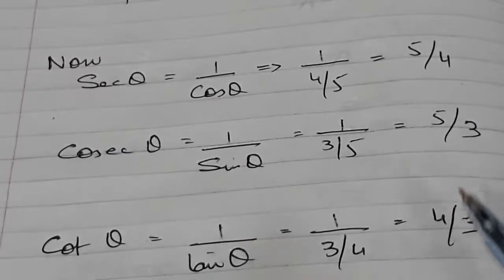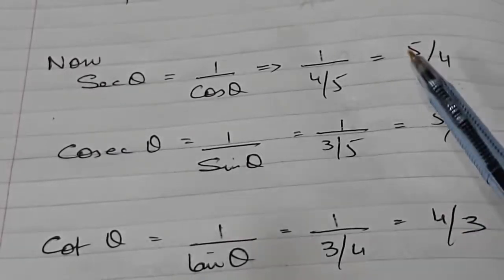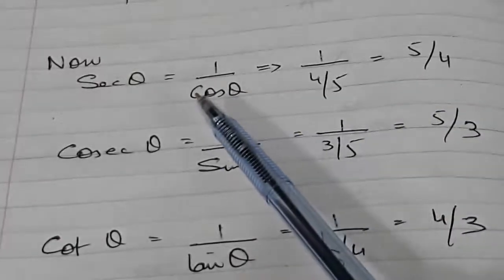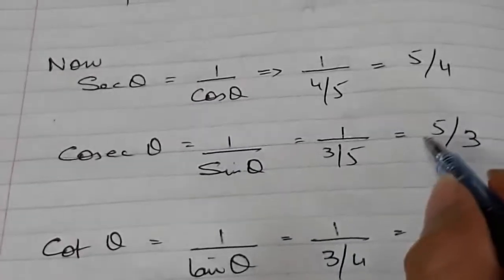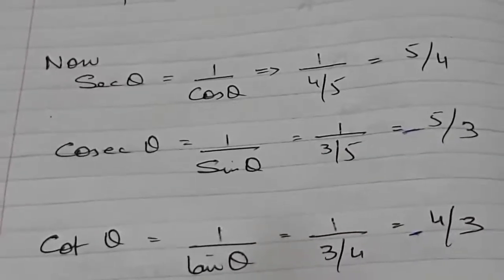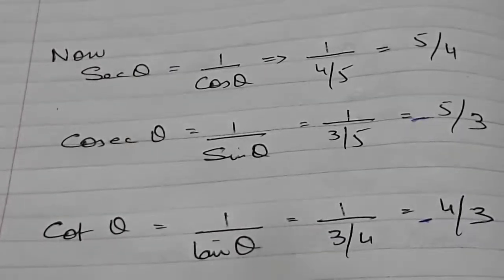Do you see anything I need to correct? Only the sec θ answer will be positive because it involves cos θ, and this answer is positive because it is in the fourth quadrant. The other two — cosec θ and cot θ — should be negative. The purpose of identifying the quadrant is to decide the sign with the other trigonometric inverse ratios.